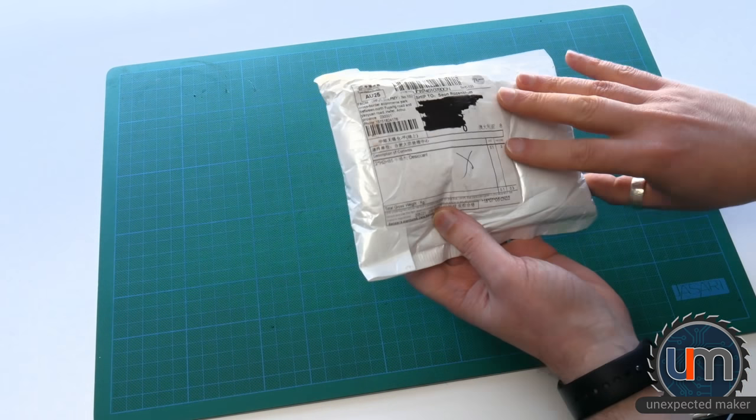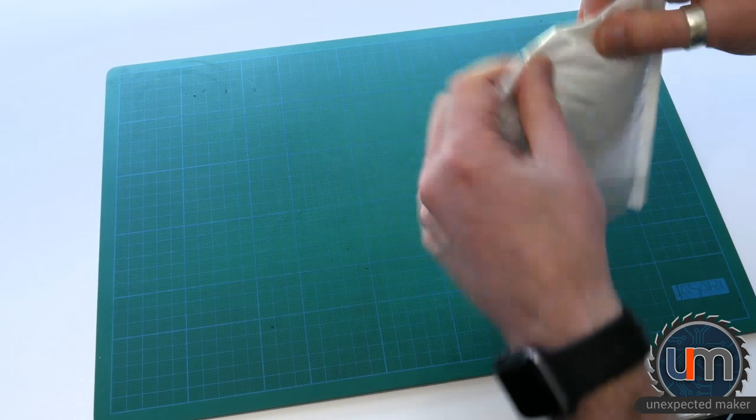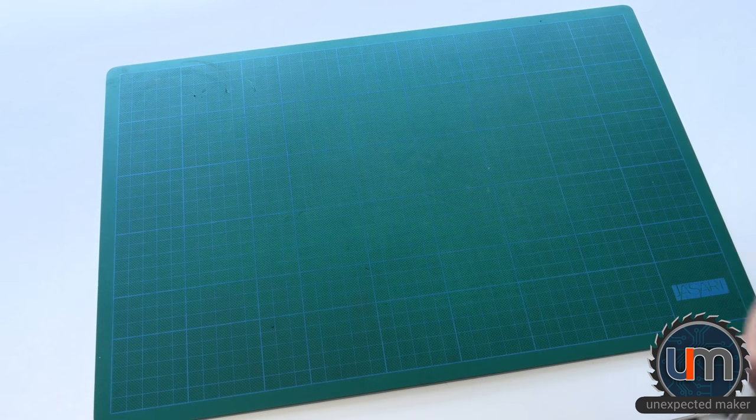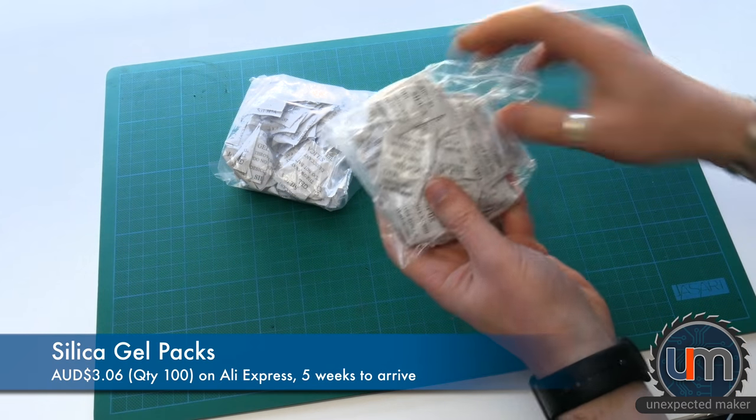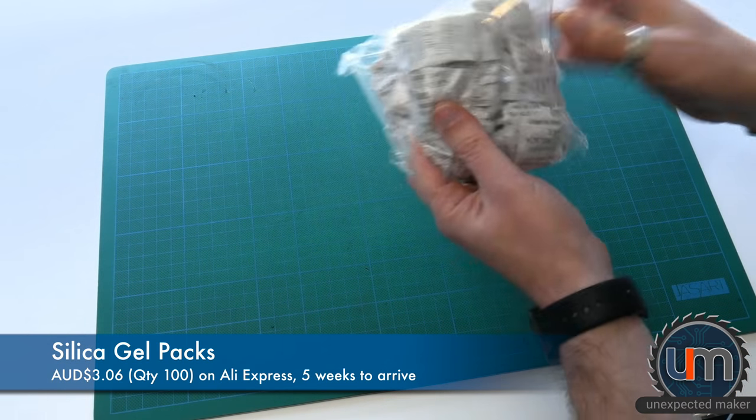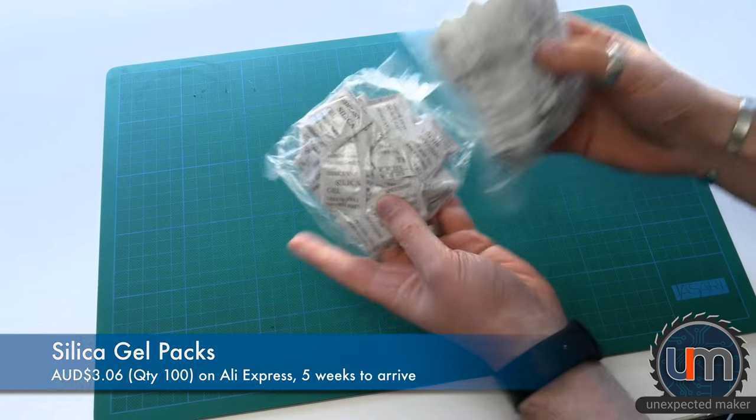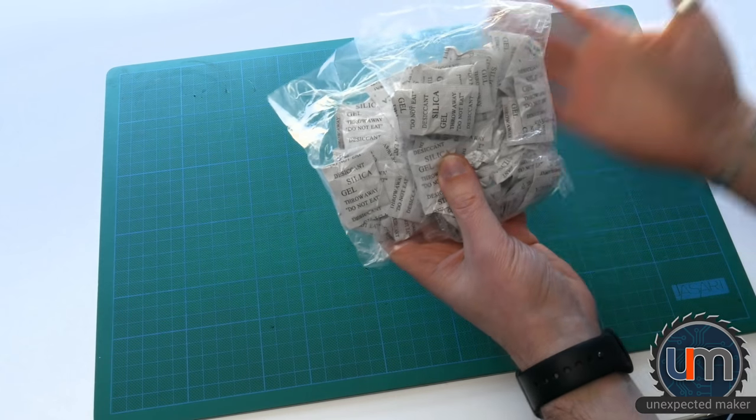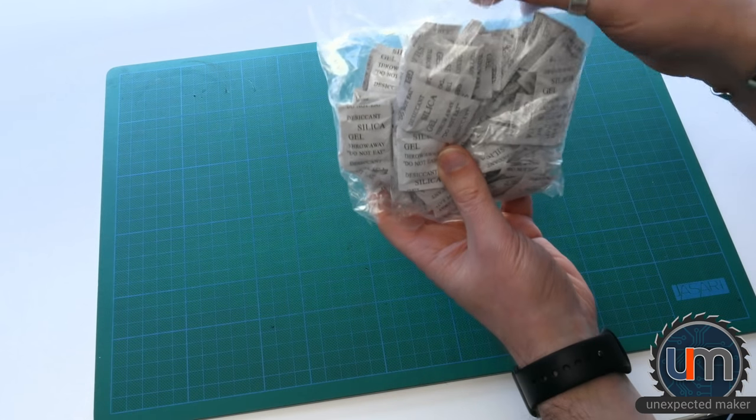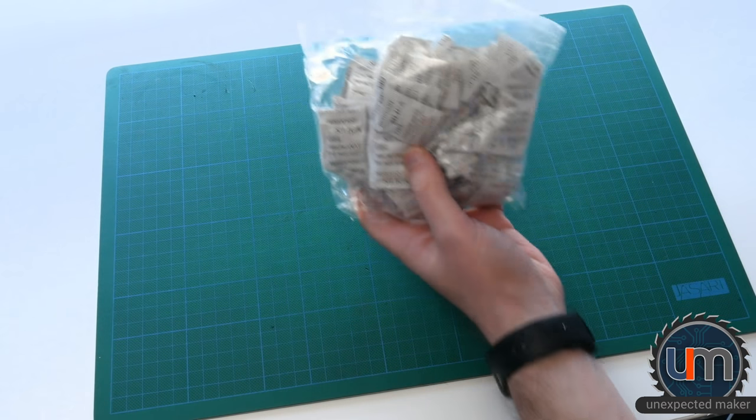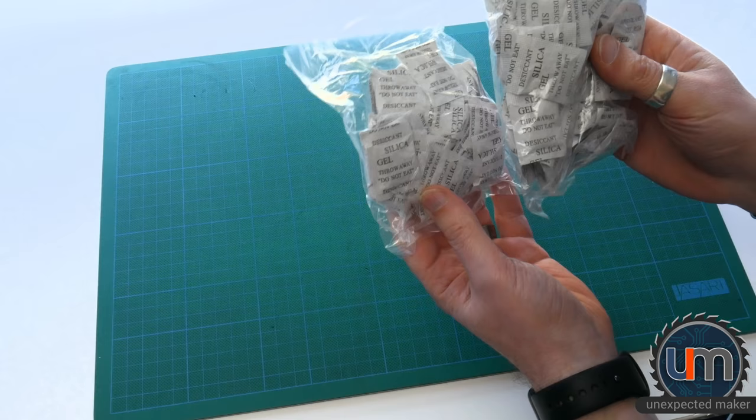Okay, next we have desiccant. I know what this is. This is completely unexciting. They're silica gel packs. That's all. I think I ordered 200 of them or maybe 100. It'll be in the description. I put these inside each one of my packages that I send out via Tindy and I'm running low so I have to buy some more.